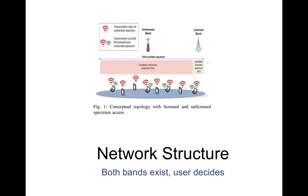This is the generic network structure the paper considers. There will be two types of spectrum available to each user: one is unlicensed spectrum and another one is licensed spectrum. As you can see from the figure, unlicensed bandwidth is large but not guaranteed, while licensed bandwidth is very limited but guaranteed by the ISP or service provider. Unlicensed bandwidth has high potential so users can decide to transmit through this band and have greater utility.